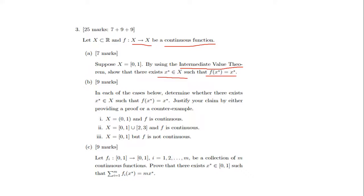This term — Intermediate Value Theorem — is important. So what is the Intermediate Value Theorem? In a closed interval [a, b], if f is continuous on that closed interval, then there exists at least one x for which x belongs to the open interval (a, b). This is the Intermediate Value Theorem.